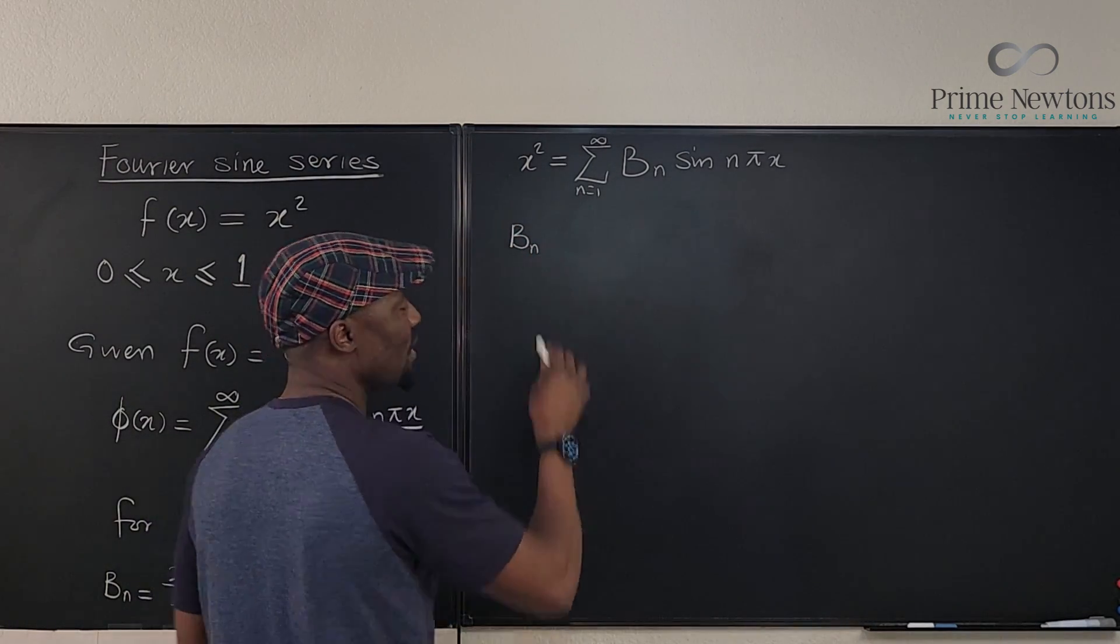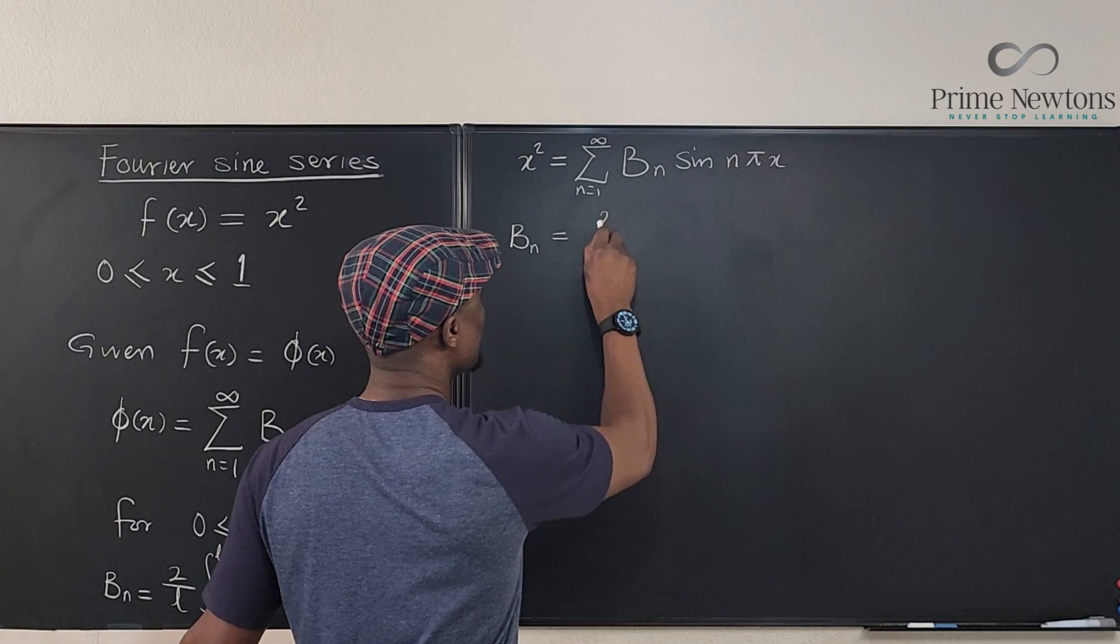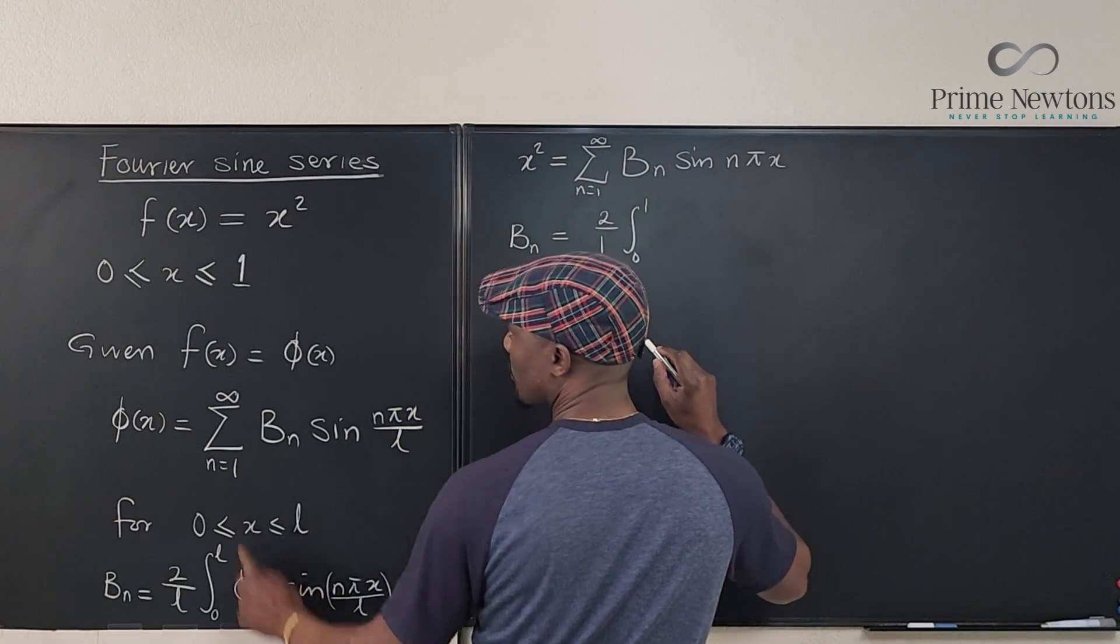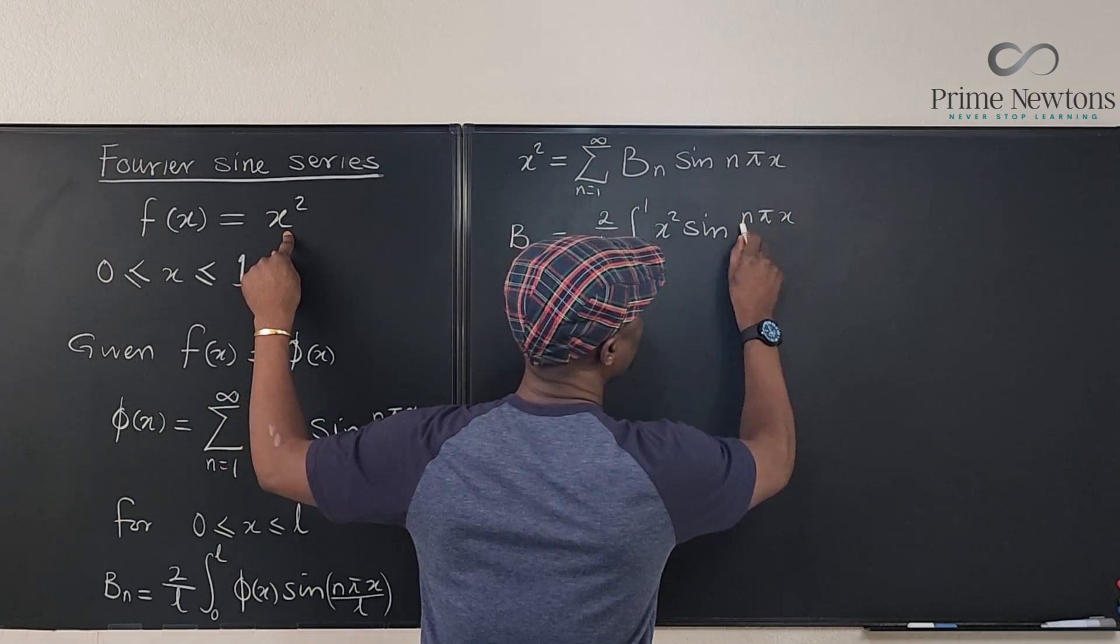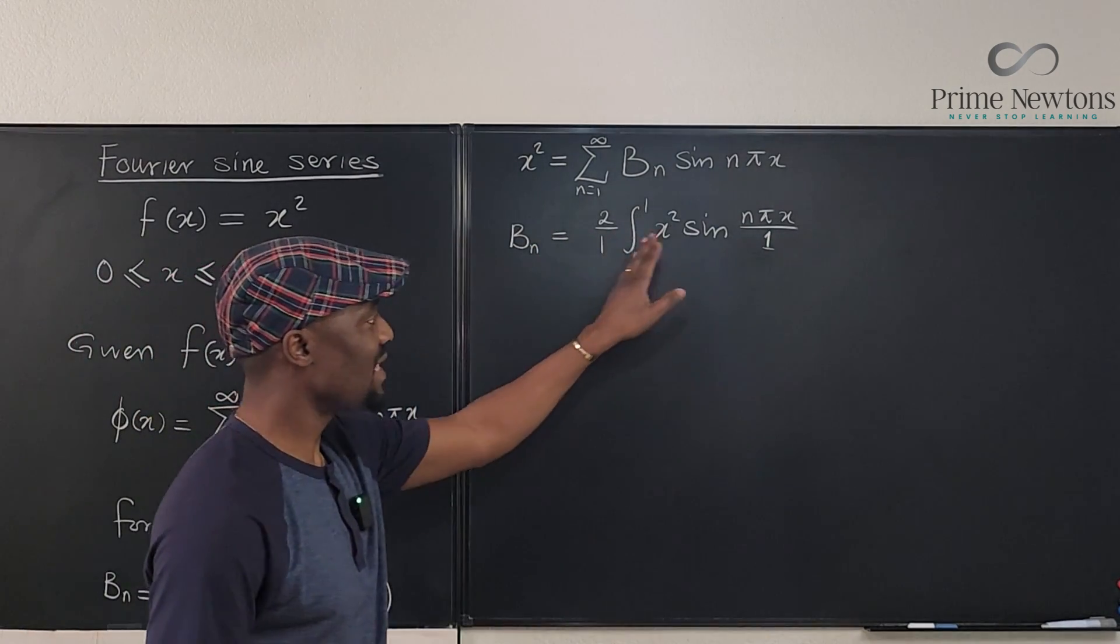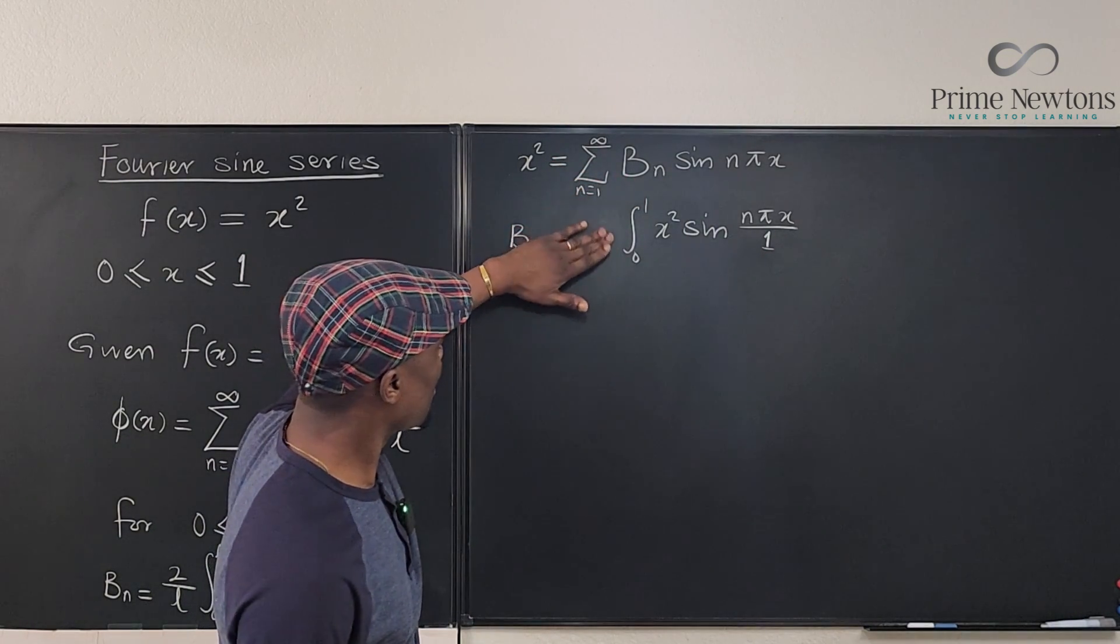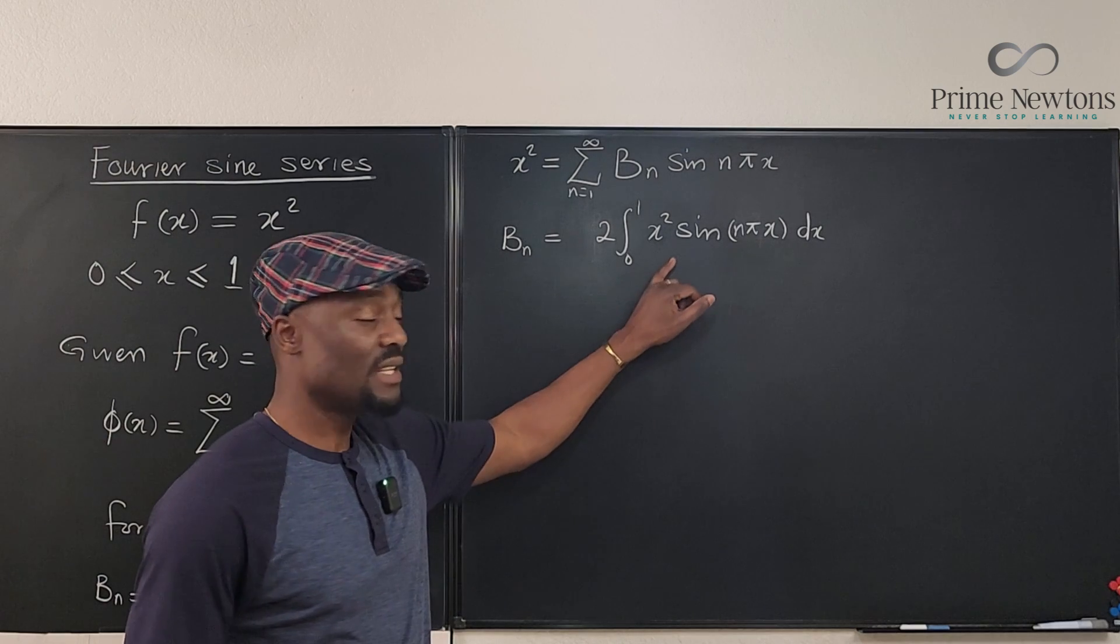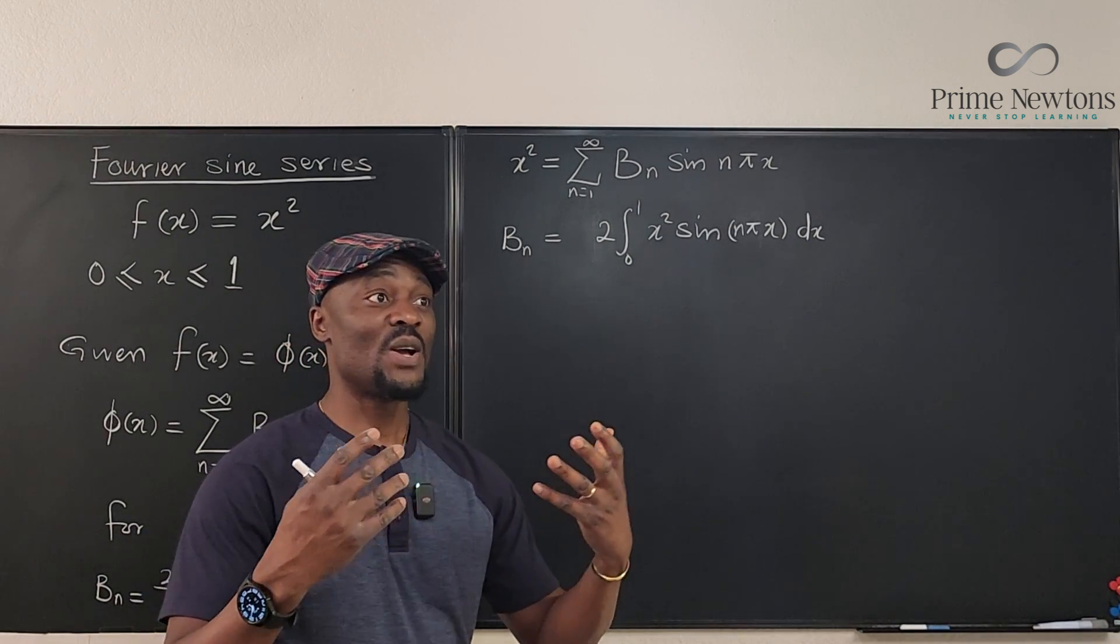From here, we know that b sub n, which is the Fourier coefficient, will be equal to 2 over 1, integral from 0 to 1 of our function, which is x squared, times sine of n pi x over 1. We don't need to write these 1s, so we can rewrite this as just 2 times the integral of x squared sine n pi x dx. I'm going to make an attempt at integrating this using the DI table.